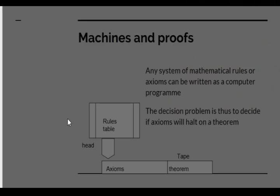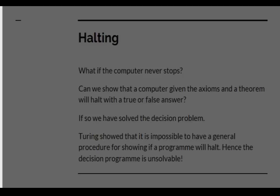Turing said that any system of mathematical rules or axioms can be written as a computer program. He can therefore cast the decision problem as deciding whether a program made up of these axioms will halt with a yes or no answer when given the theorem. But here we have a problem. What if the computer never stops? Can we show that a computer given the axioms and the theorem will halt with a true or false answer? If we have a general method for showing that, then we have a general method for showing that a set of axioms applied to a theorem can result in a definite answer, and we've solved the decision problem. But in fact, Turing showed the opposite. He showed that it was impossible to have a general procedure for showing if a program will halt. And hence he showed that the decision problem is unsolvable.